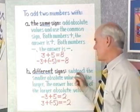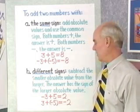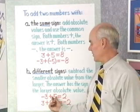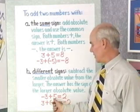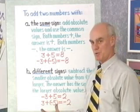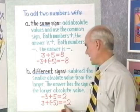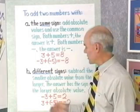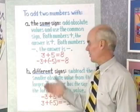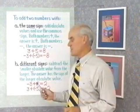If the two numbers have different signs, we subtract the smaller absolute value from the larger absolute value, and we use the sign that's in front of the number with the larger absolute value. For example, negative 3 plus positive 5: subtract absolute values to get 2; the number with larger absolute value is positive 5, so the answer is positive 2. Likewise, 3 plus negative 5: subtract absolute values to get 2; the number with the larger absolute value is negative, so the answer is negative 2.